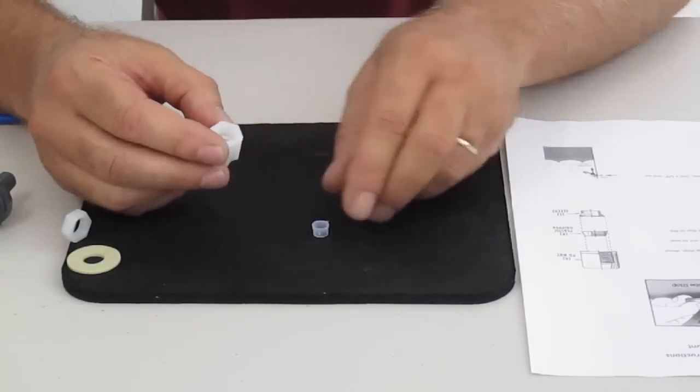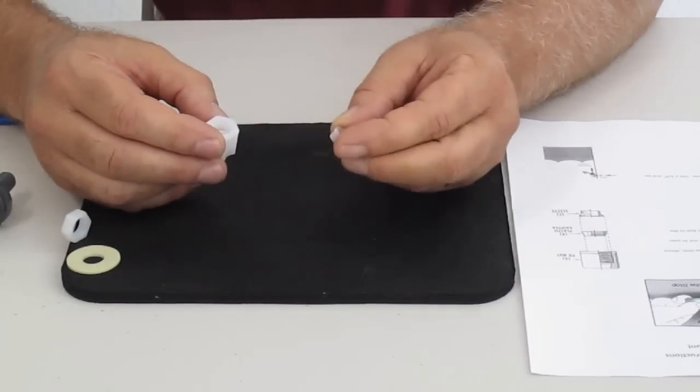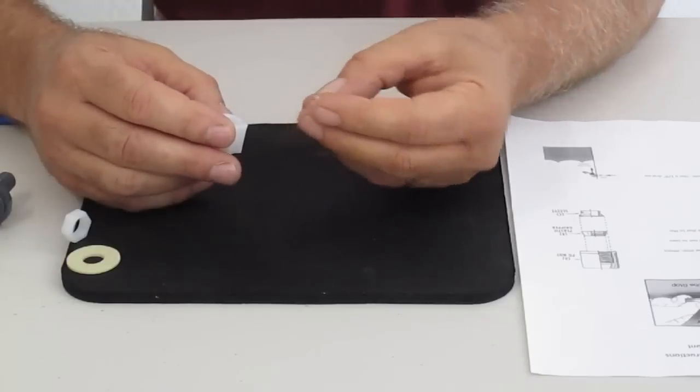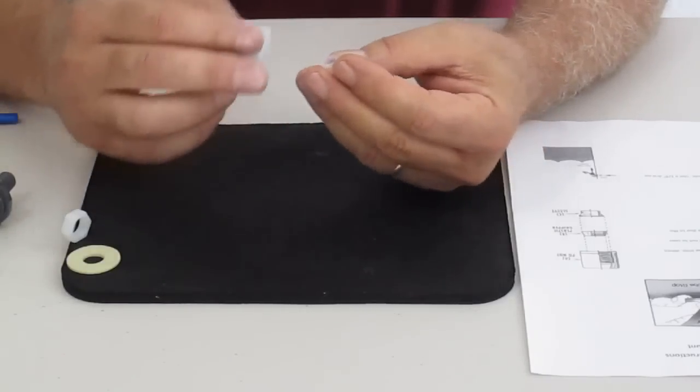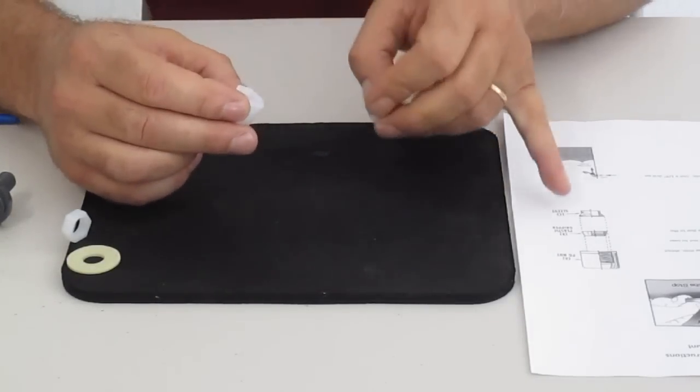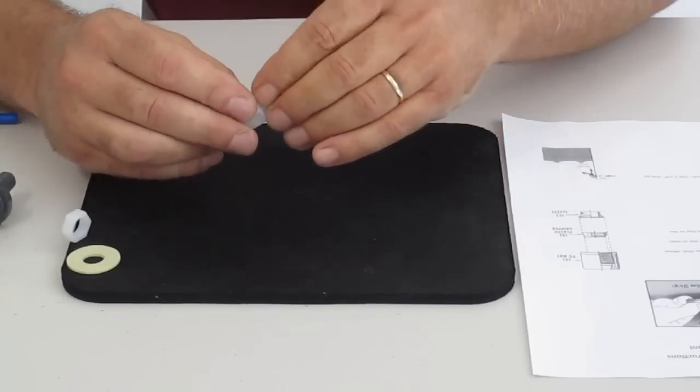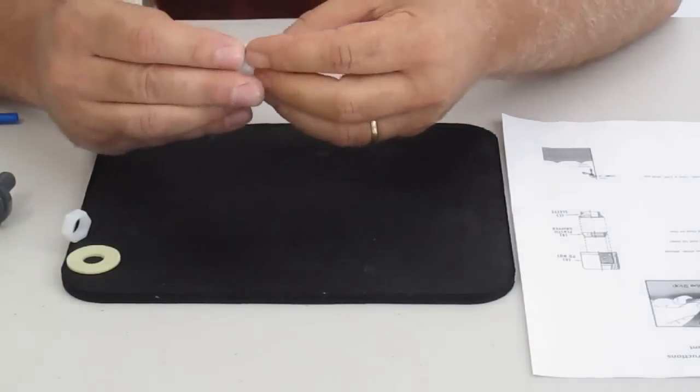Once that's nestled in there, we want to take what we call our sleeve. The sleeve, you want to make sure that the sleeve goes in to where these little tiny nibs go in first. Again, look at your diagram and that shows you how to do that. You just pressure fit that in there.